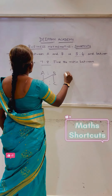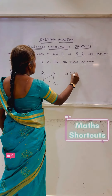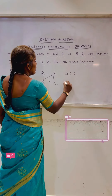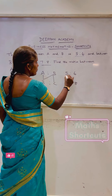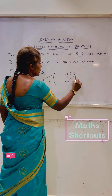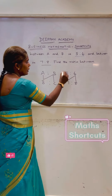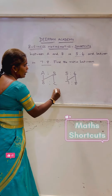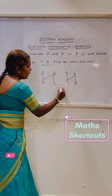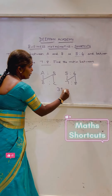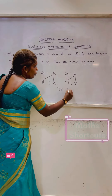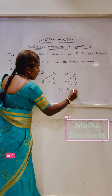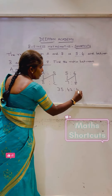A is to B is 5 to 6. B is to C is 7 to 8. Reverse N method: 5 into 7 is 35, 6 into 7 is 42, and 6 into 8 is 48.